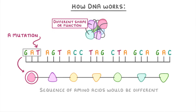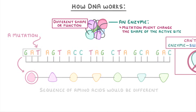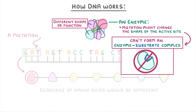For example, if this protein was an enzyme, then the mutation might change the shape of the enzyme's active site so that it can't fit the substrate anymore. This would mean that it can't form an enzyme-substrate complex and so it couldn't catalyze the reaction.